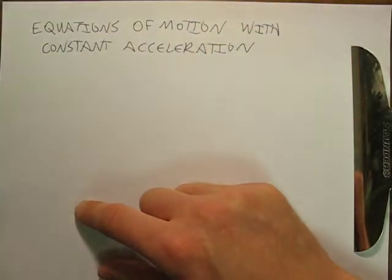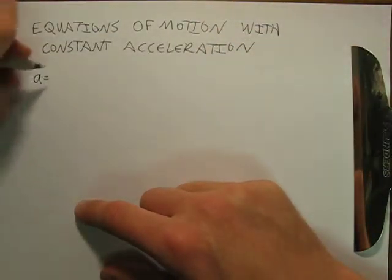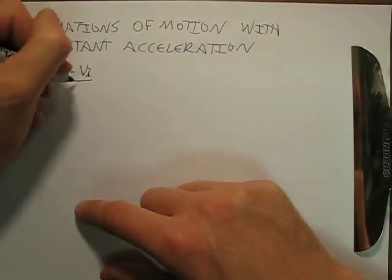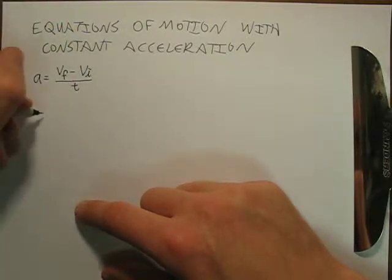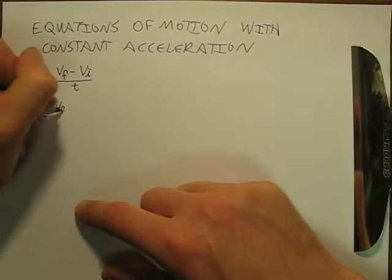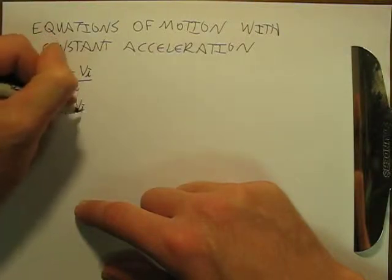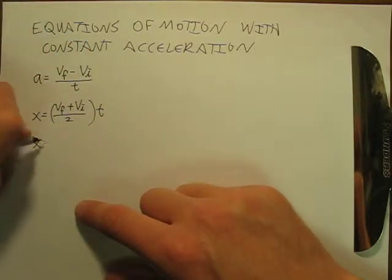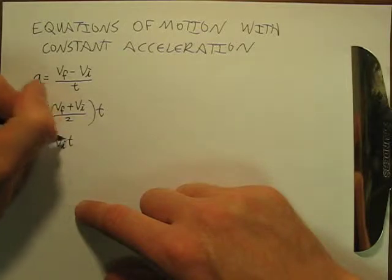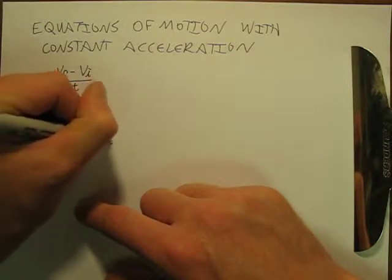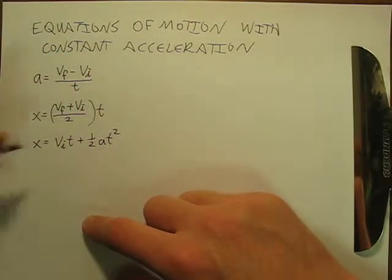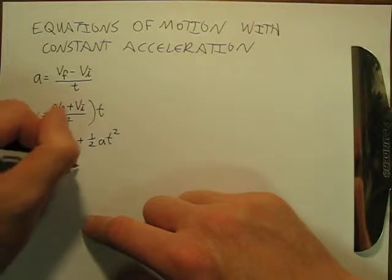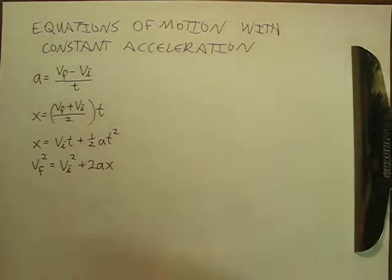Alright, so let's just get right to it. We have a equals VF minus VI over t. We have x equals VF plus VI over 2 times t. And then we have x equals VIt plus 1 half at squared. And finally, we have VF squared equals VI squared plus 2ax.